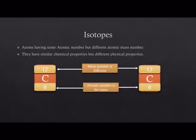Isotopes are atoms which have similar atomic number but different atomic mass number. Hence their chemical properties are same but they have different physical properties.